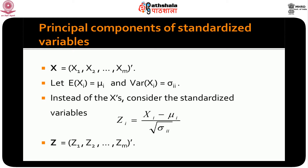If you calculate the eigenvector corresponding to lambda 1, you would find that p1 turns out to be (1/√m, 1/√m, ..., 1/√m). So the first principal component comes out to be y1 = p1′z = (1/√m) × summation of z_i for i = 1 to m.